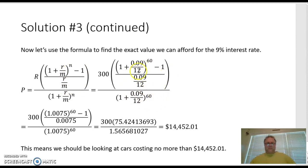I'm going to plug in all of my figures here. I'm going to perform the correct order of operations by doing everything in the parentheses and then the exponents and then the dividing and then the multiplying. And I should get with a 9% interest rate, a maximum of $14,452.01. That means that I shouldn't be looking at cars that cost any more than that if I want to keep my payments to $300 per month.